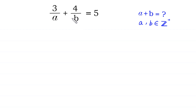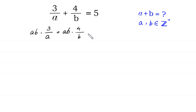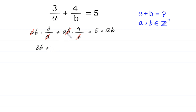First of all, we multiply both sides of this equation by AB, the LCM of A and B. So AB times 3 over A plus AB times 4 over B is equal to 5 times AB. This A cancels with this A and this B cancels with this B, giving us 3B plus 4A is equal to 5AB.